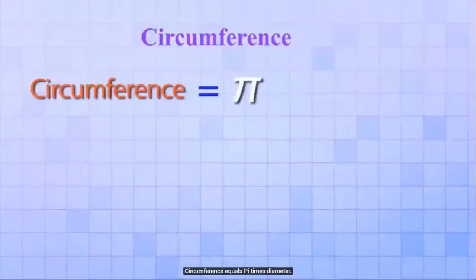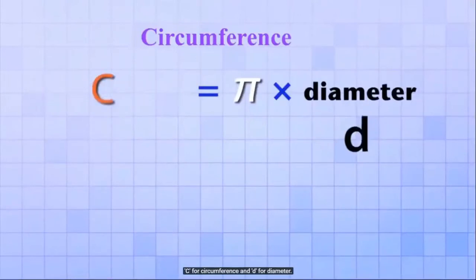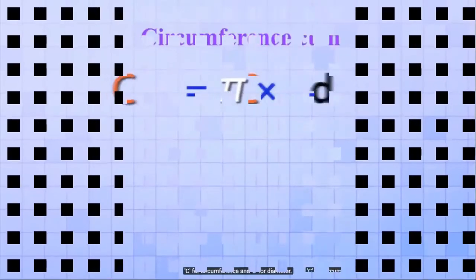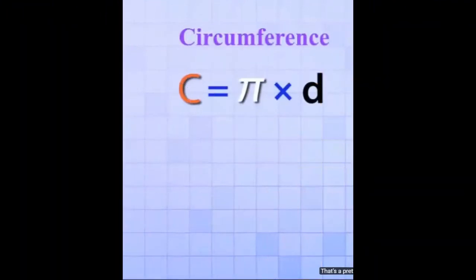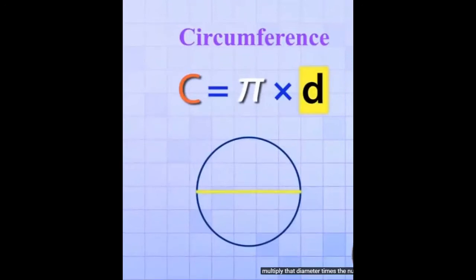Circumference equals pi times diameter. Just like most formulas, we use abbreviations: C for circumference and D for diameter. That's a pretty simple formula — it tells us that if we know the diameter of a circle, all we have to do is multiply that diameter times pi and we'll get the circumference.